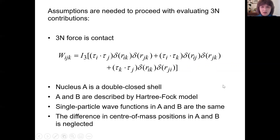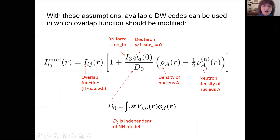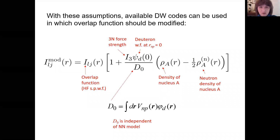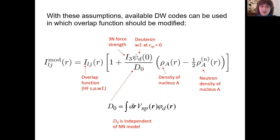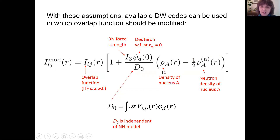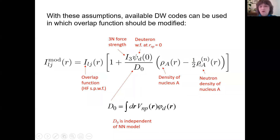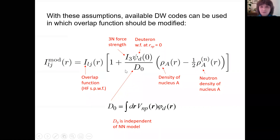Within these assumptions, it is possible to use all available direct reaction codes — we only need to modify the overlap integral. The modification is a factor that depends on the distance between the neutron and the target, with radial dependence determined by the difference between the total density of nucleus A and half its neutron density. When R goes to infinity, the density goes to zero, so there is no correction to the overlap integral at large distances.